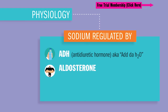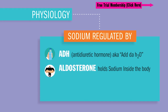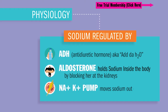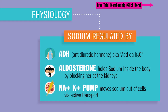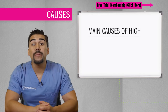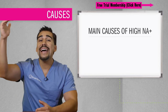Aldosterone — I call aldosterone the security bouncer in the kidneys — holds onto sodium inside the body by blocking her at the kidney exits. And lastly, sodium is regulated by the sodium-potassium pump, which moves sodium out of the cells via active transport.